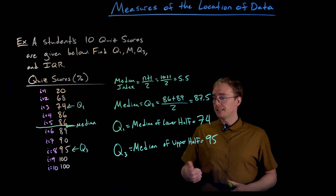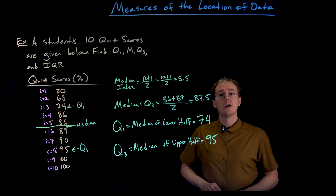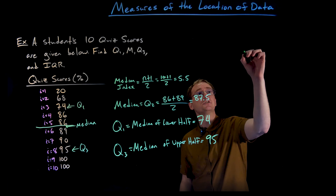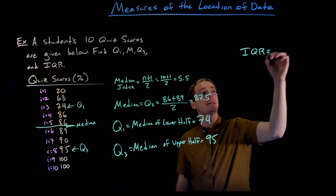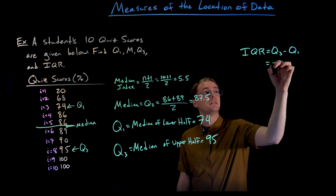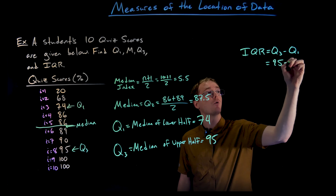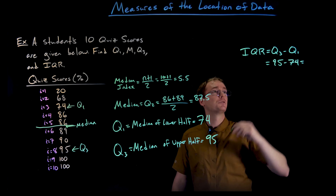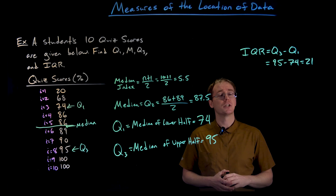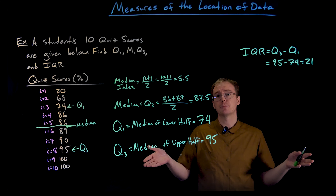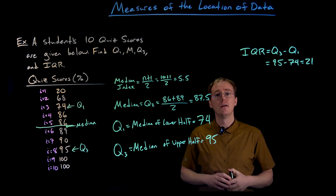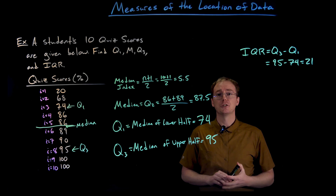We've now found our median as well as our first and third quartiles. With Q1 and Q3, we're ready to find the IQR, or the interquartile range. The IQR is given by Q3 minus Q1 — that's 95 minus 74, which equals 21. So the IQR is 21, meaning 50% of our data falls within this range of 21 units.